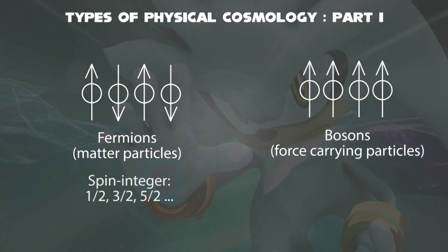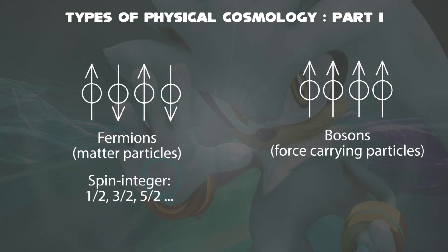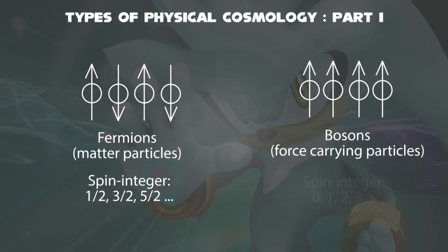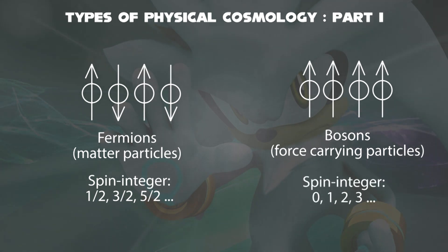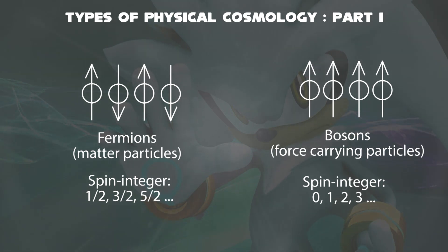For fermions, they have a half-odd integer spin value, starting from 1/2, then 3/2, then 5/2, and so on. Whereas for bosons, they have an integer spin value starting from 0, then 1, then 2, and so on.